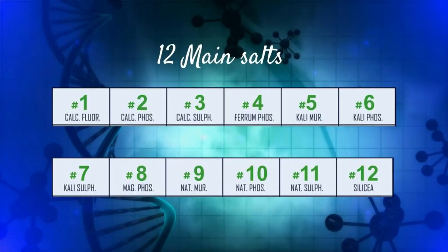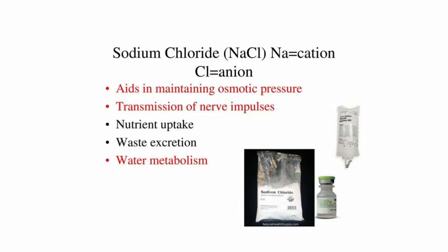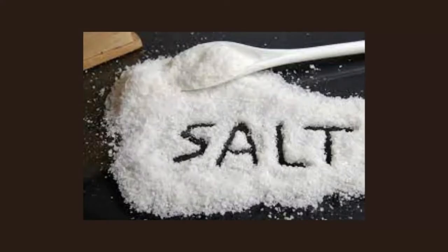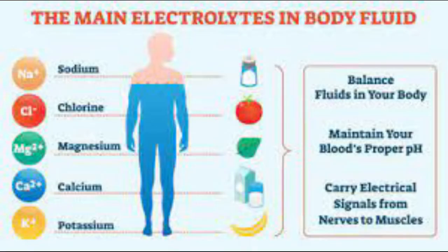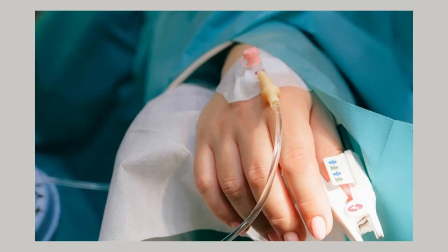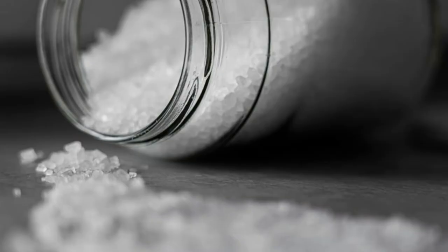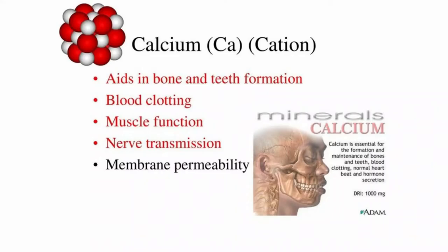Each salt has a unique property in how it supports the physical body. Starting with sodium salts — the most common example is sodium chloride, also called table salt. We've all heard how our body needs salt to function properly because sodium is a crucial electrolyte. When a person gets an intravenous drip, one of the main ingredients in that drip is sodium, so you can imagine the importance of sodium as a mineral to the human body.